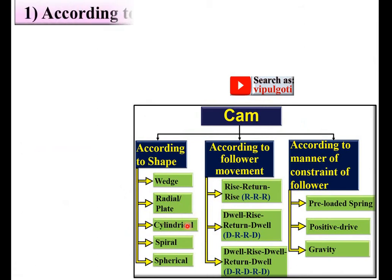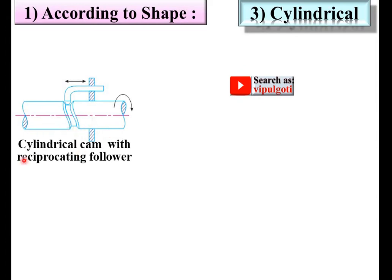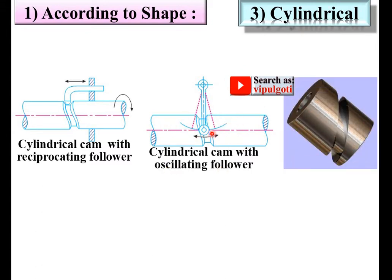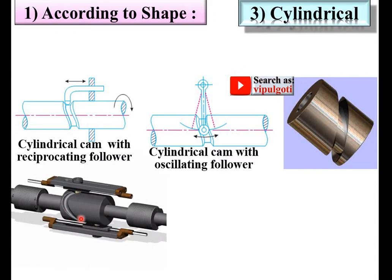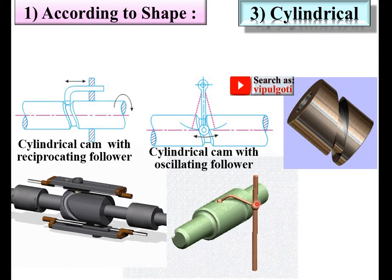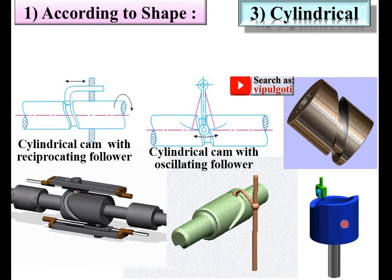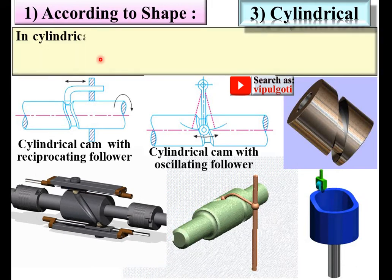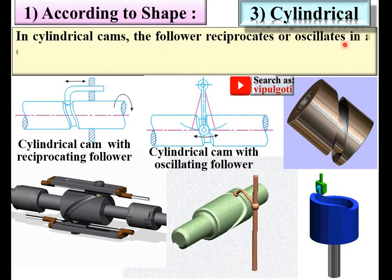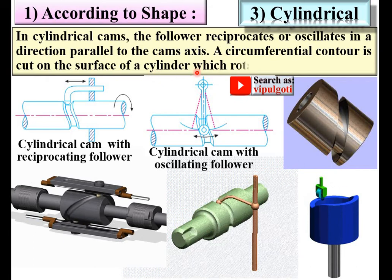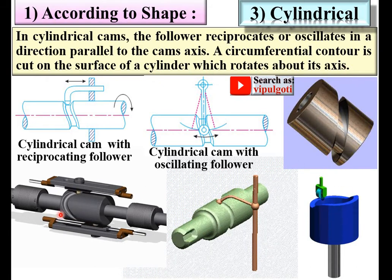Next is the cylindrical cam. Here you can see a cylindrical cam with a reciprocating follower, and also a cylindrical cam with an oscillating follower. In a cylindrical cam, the follower reciprocates or oscillates in a direction parallel to the cam axis. A circumferential contour is cut on the surface of a cylinder which rotates about its axis.